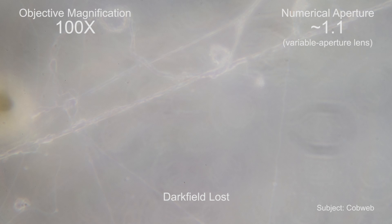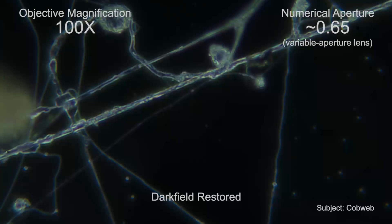At the dry condenser's upper limit, this image shows noticeable glare. Well above the condenser's limit, the dark field is completely lost. By reducing the aperture of the lens, the dark field may be restored.